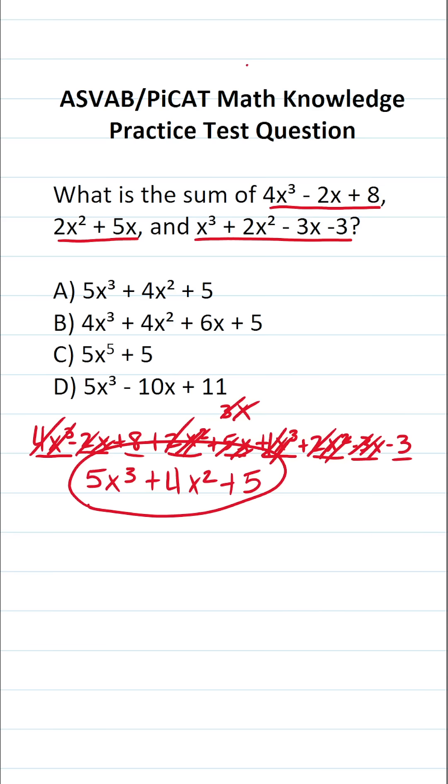So when we add these three polynomials together, our result is 5x³ + 4x² + 5, which is answer choice A.